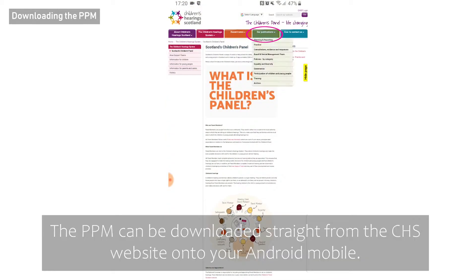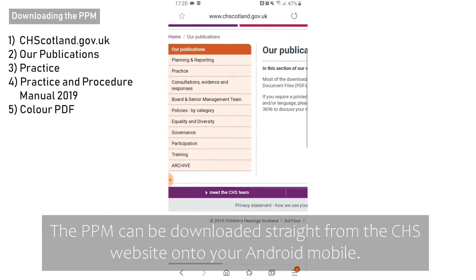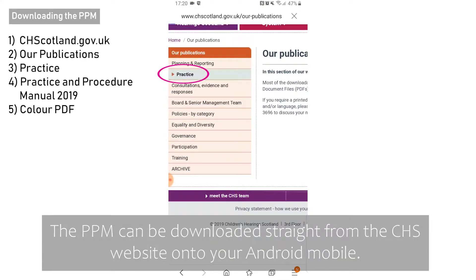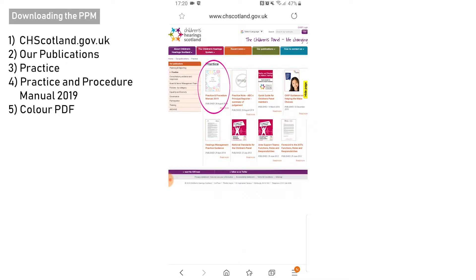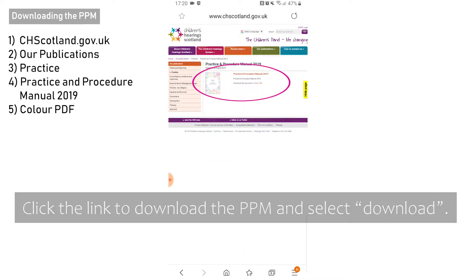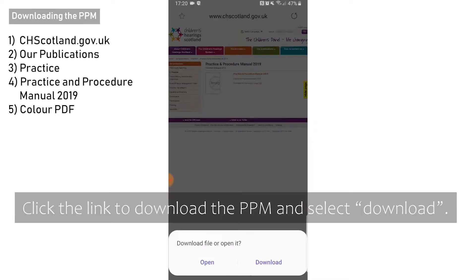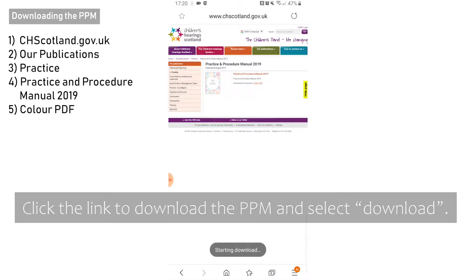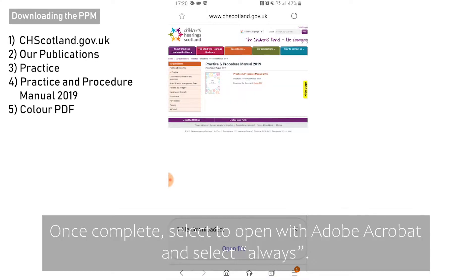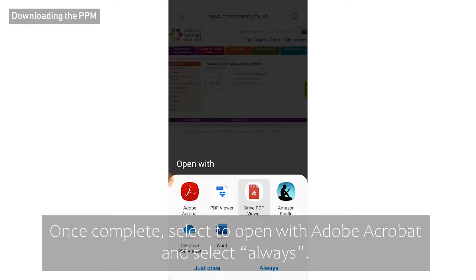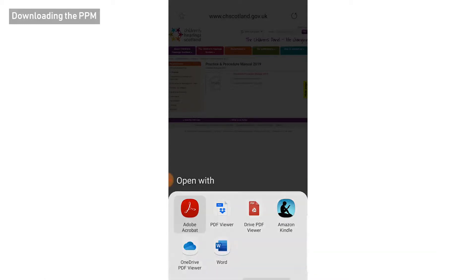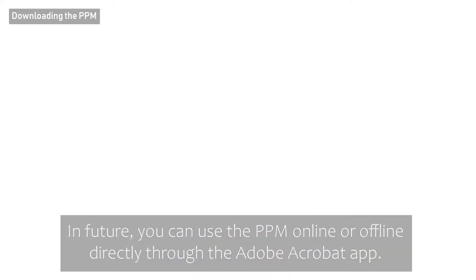The PPM can be downloaded straight from the CHS website onto your Android mobile. Click the link to download the PPM and select Download. Once complete, select Open with Adobe Acrobat and select Always. In future, you can use the PPM online or offline directly via the Adobe Acrobat app.